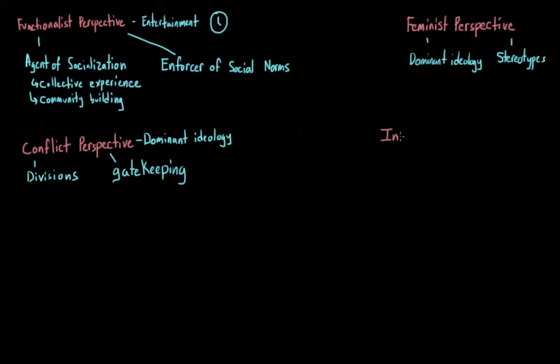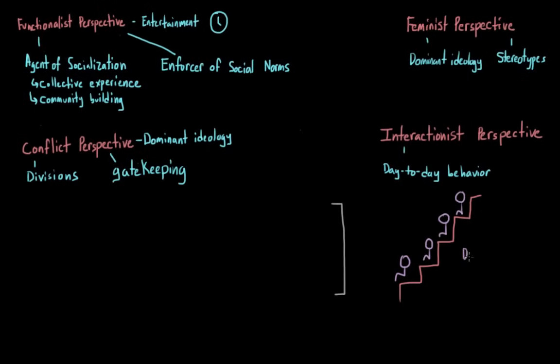The interactionist perspective looks at mass media on the micro level to see how it shapes day-to-day behavior. It looks at how mass media blurs the line between solitary and group activities. So think of the act of seeing a movie. You may be watching it with other people, but because of societal norms or even theater rules, you are actually forbidden from talking about the movie with the people you're with.